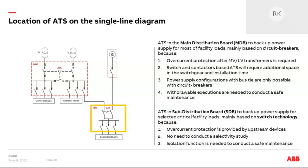ATS based on switch technology is usually located in sub-distribution boards to provide power continuity for selected critical loads. Switch-based solutions are preferable in this case because overcurrent protection can be provided by upstream devices. With circuit breaker-based ATS you would need to conduct a selectivity study, possibly over-size upstream circuit breakers, or use zone-selectivity. Finally, with switch-based ATSs you can simply padlock the unit in the zero or off position to conduct maintenance downstream of the ATS.